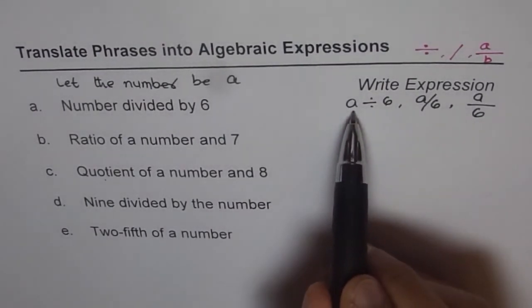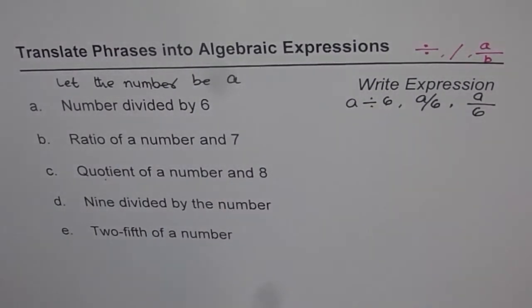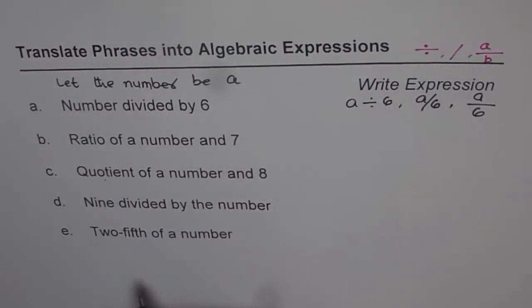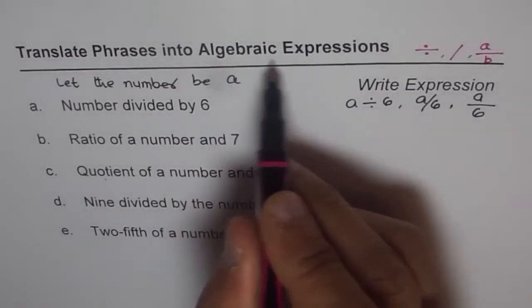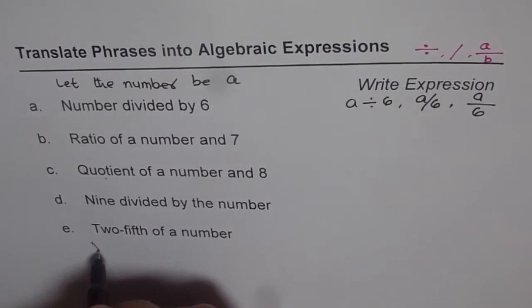We have a variable, we have a symbol, and a constant. So by now you must have got the idea that when we say algebraic expression, what are the three things which are in it? We have a variable.